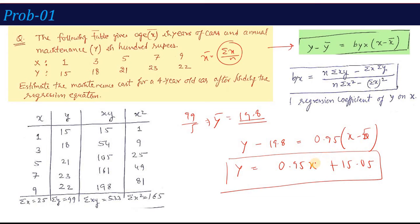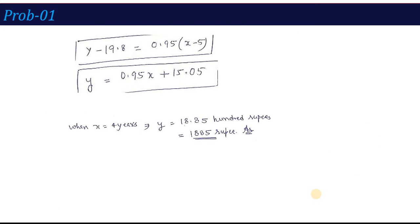This is our regression equation. Notice that the x coefficient in this equation is the regression coefficient. Now for the last part, we need to calculate maintenance cost for a 4-year-old car. Putting x equals 4 in our equation, we get y equals 18.85 hundred rupees. So the value of the annual maintenance cost when the car age is 4 years is 1885 rupees.